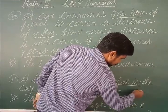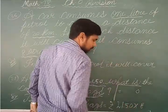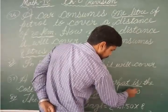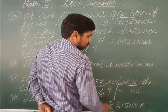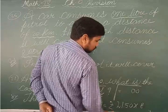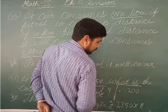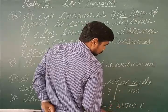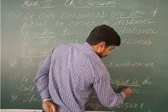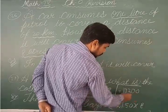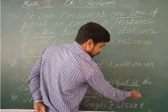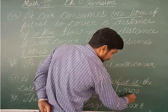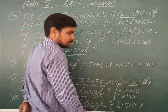8 times 5 is 40 — write 0, carry 4. 8 times 1 is 8 plus 4 is 12 — write 2, carry 1. 8 times 2 is 16 plus 1 is 17. So the result is 1720. Before the last 2 digits, place the decimal — so rupees 172.00.